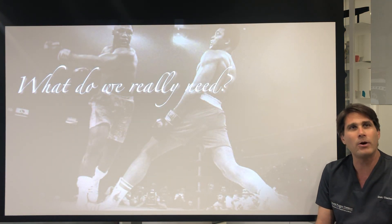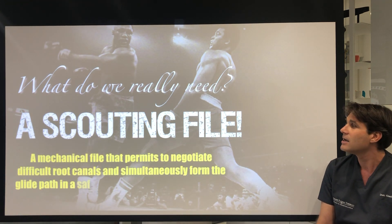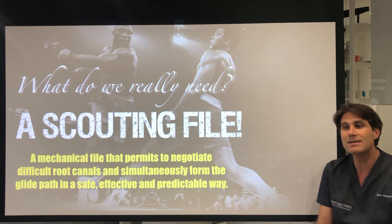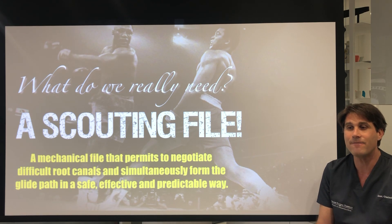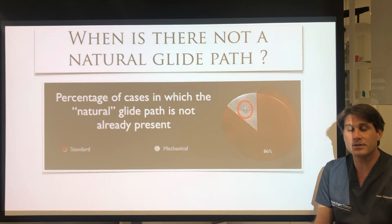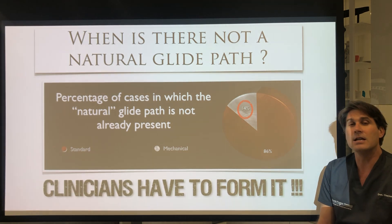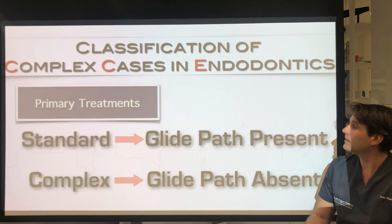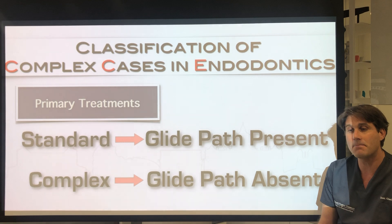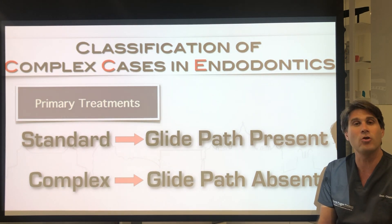What do we really need in clinical practice to improve prognosis? We need a scouting file — a file that performs the initial negotiation of the root canal, permitting negotiation of difficult root canals while simultaneously forming the glide path in a safe, effective, and predictable way. This is needed in around 15% of root canals, where we need to do something more to obtain a glide path because a natural glide path is not already present — clinicians have to form it. This defines, for me, the classification of complex cases: if a natural glide path is present, they are standard cases; if it is not and must be formed, those are truly complex cases.